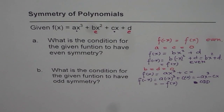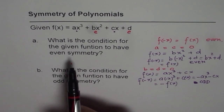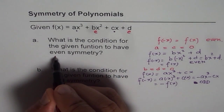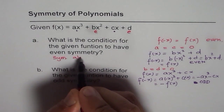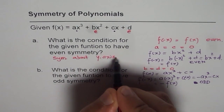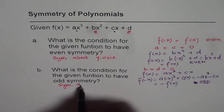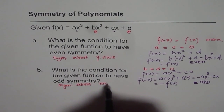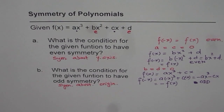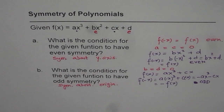Remember: when we say even function, it is symmetric about the y-axis. When we talk about odd symmetry, it is symmetric about a point — and that point is the origin. If the function does not have even or odd symmetry, we say it is neither. I hope that's clear — go through some more examples to make sure. Thank you.